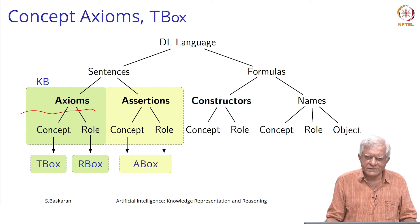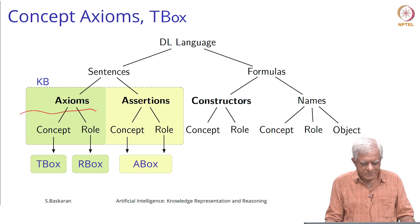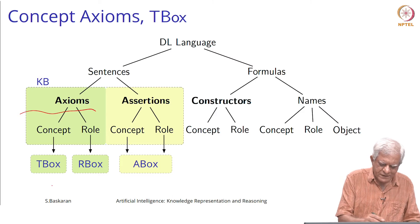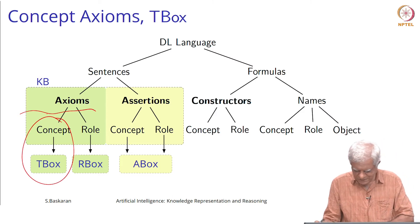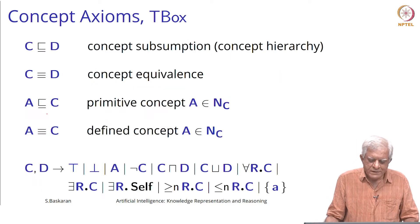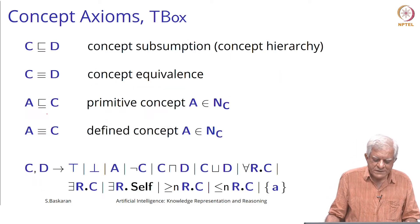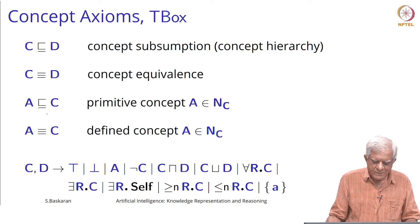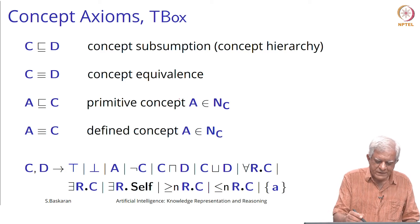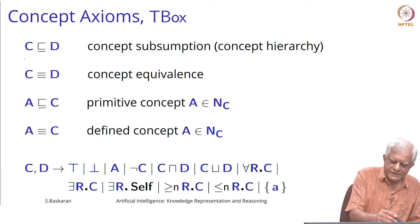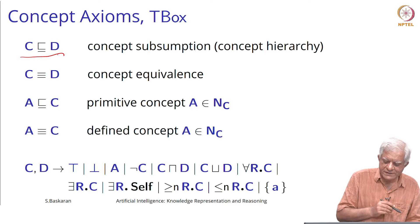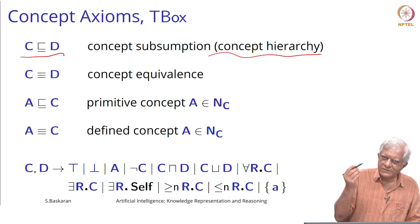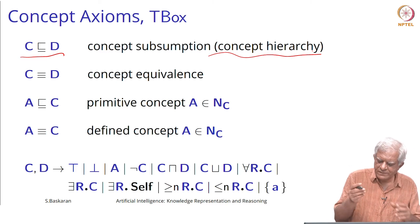Let us now look at what are the kind of statements that we can make. We will start with the t-box. There are essentially four statements that we can make. We can say that a concept C is subsumed by another concept D, which defines a concept hierarchy or a taxonomy.